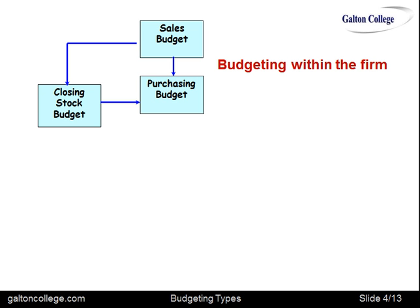Between the sales and the purchasing, we get the closing stock budget, which indicates how much the business wants in stock at the end of the period, and how much should be spent on stock and how the stock is managed over that period.